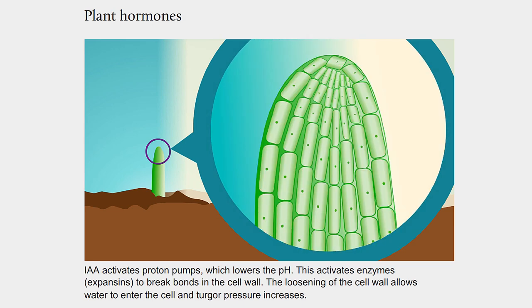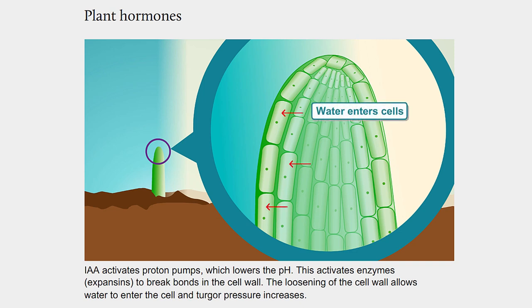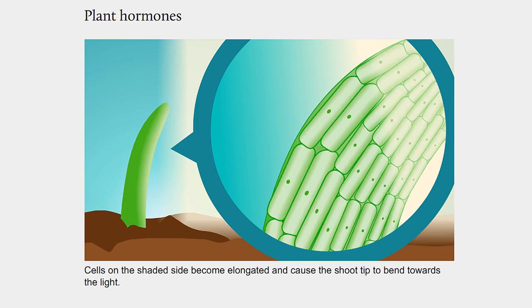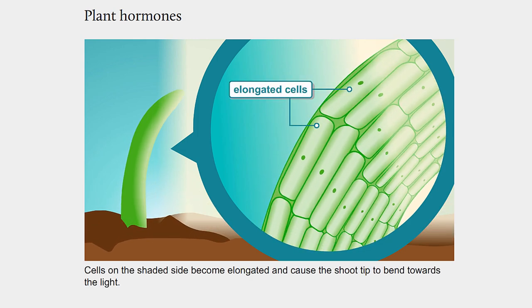IAA activates proton pumps, which lowers the pH. This activates enzymes, expansins, to break bonds in the cell wall. The loosening of the cell wall allows water to enter the cell and turgor pressure increases. Cells on the shaded side become elongated and cause the shoot tips to bend towards the light.